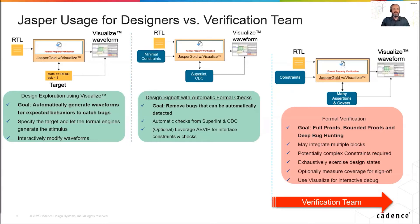Many customers find that using Cadence ABVIP — assertion-based verification IP — along with Jasper, provides high ROI since it can provide the necessary constraints for all of the checks. Cadence ABVIP also allows the designer to catch interface bugs and formally prove their block against particular protocols, such as AXI.